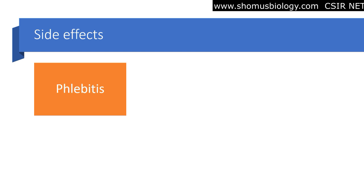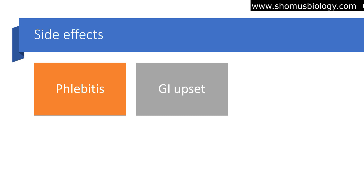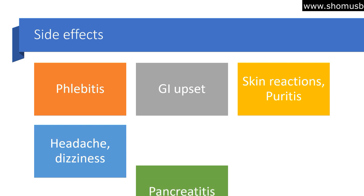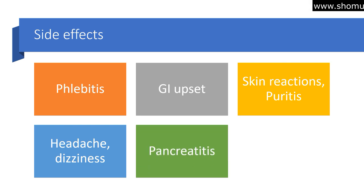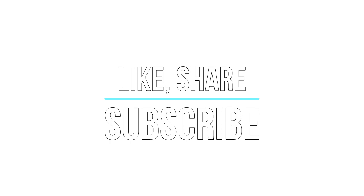Side effects of ceftriaxone include phlebitis, gastrointestinal upset — since antibiotics destroy some normal healthy microflora of the gut, causing dysbiosis — skin irritations, pruritus, headache, and dizziness. Pancreatitis is a rare but notable side effect. Colitis can also occur if ceftriaxone is used for a long period of time, which can become serious if not managed properly.